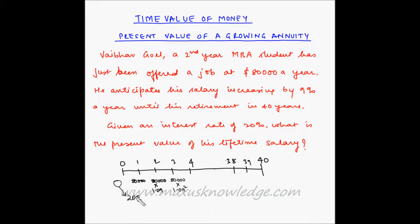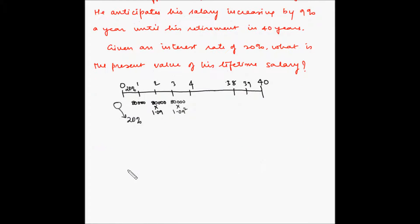So how much money should I have today such that if I invest that at 20% interest per annum, then it will allow me to withdraw my normal salary which I am expecting? In other words, Vaibhav wants to know the present value of his lifetime salary if the interest rate is 20%. So now we know the formula for finding the present value of a growing annuity.